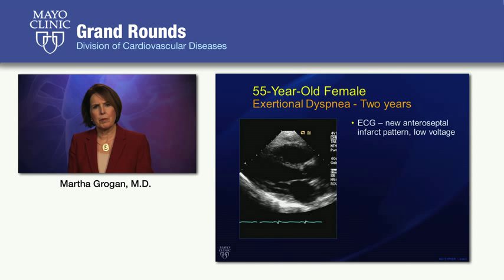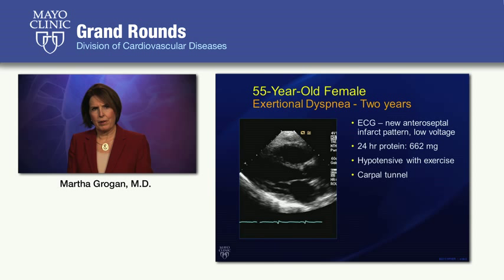Her 24-hour urine showed proteinuria. She was hypotensive with exercise, and she was scheduled for a carpal tunnel release. So this patient had many clinical clues to cardiac amyloidosis even though her echo did not show typical findings. As the clinician, think about what test you would order to establish the diagnosis.